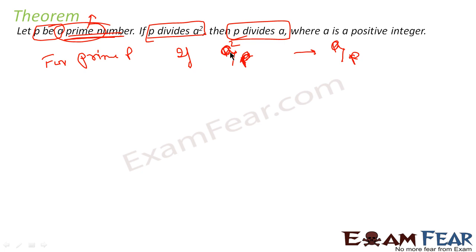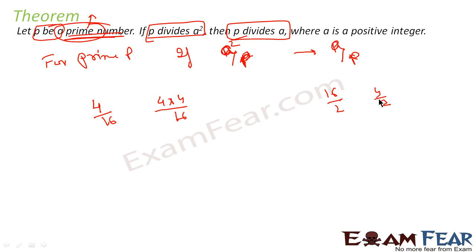But if P is not prime, this is not true. For example, take 4 and 4² which is 16. If 16 divides 16, it doesn't mean that 16 divides 4, because 16 is not a prime. But if we take a prime number, for example 2: if 2 divides 16, then 2 also divides 4. So if P is a prime number and P divides A², then P divides A also — only for prime numbers.